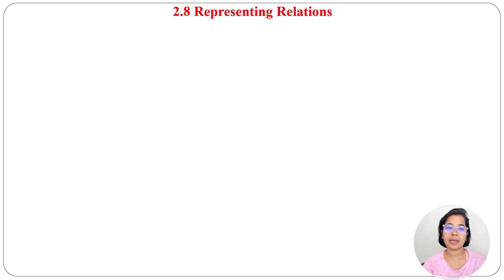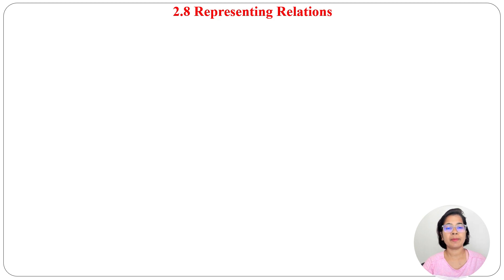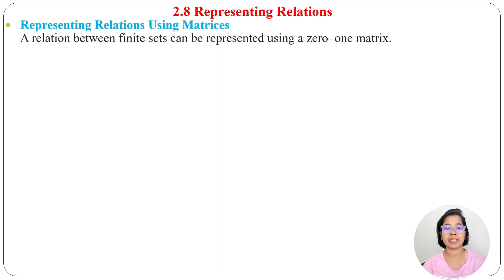Till now I already discussed relations and their properties like reflexive, symmetric, and transitive. In today's lecture, I will discuss representing relations. A relation can be represented in two ways: one is matrix representation and another is digraph representation. Today I will discuss representing relations using a matrix. We can use a 0-1 matrix for representing a relation.